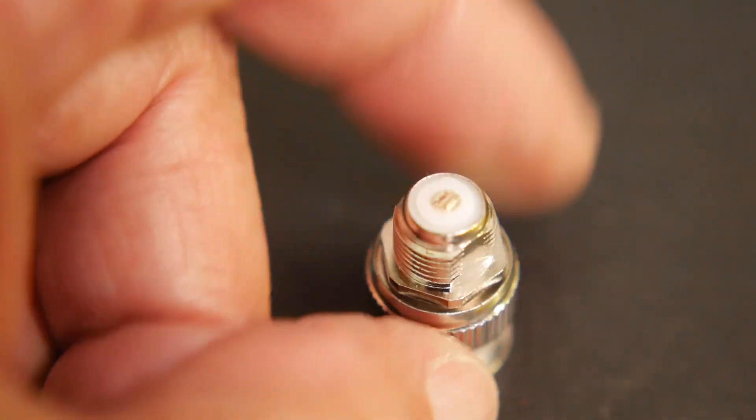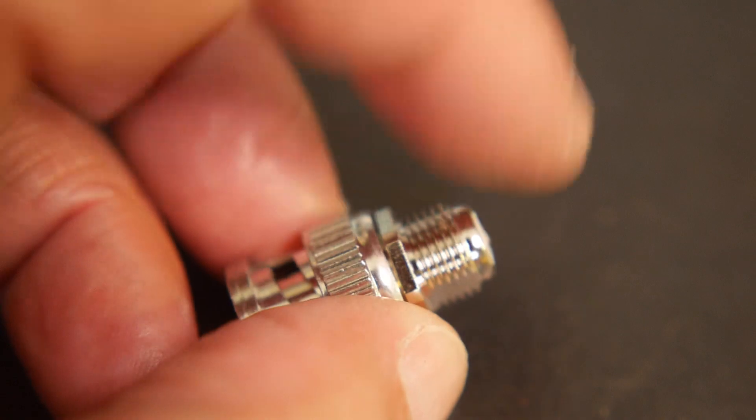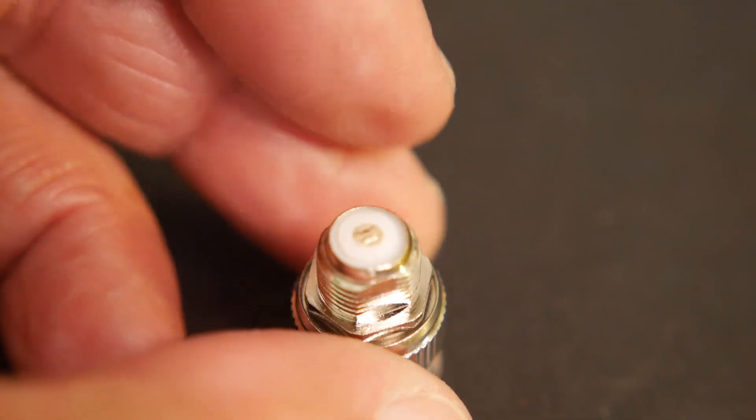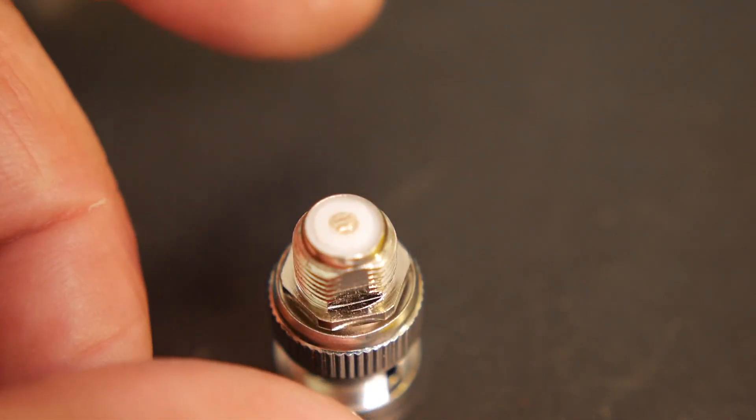So I ended up with something like this. So I had one connector that got cut off and everything was flush. So this is now going to be my open. This is my new cal open.